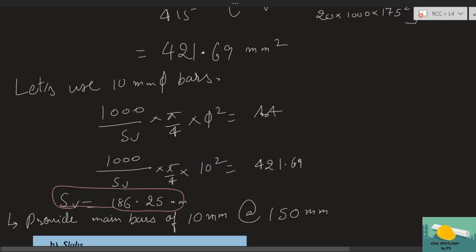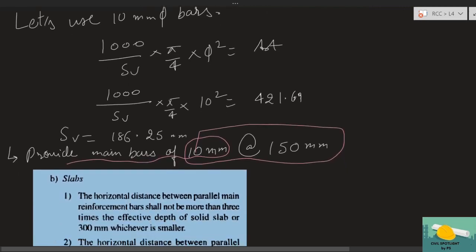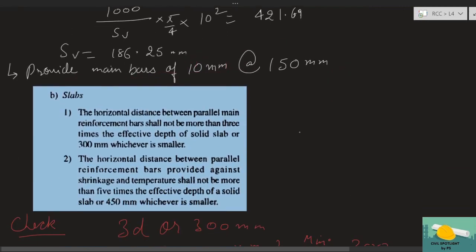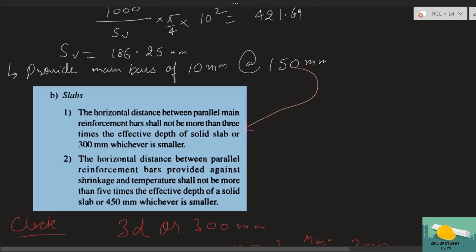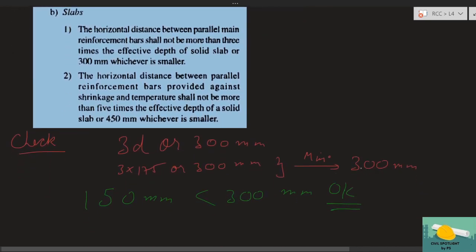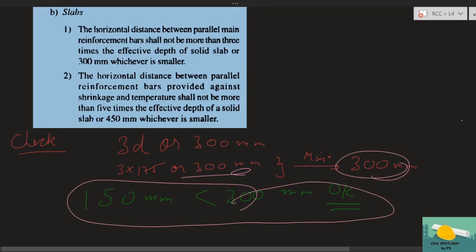Since we prefer to provide spacing less than or equal to the calculated value, we provide 10 mm bars at 150 mm c/c. As a civil engineer, always design with a factor of safety. Now check spacing limits from the code: maximum spacing = 3d = 3×175 = 525 mm or 300 mm, whichever is less → 300 mm. Our 150 mm < 300 mm — codal provision satisfied.